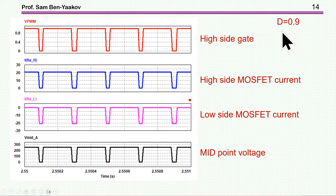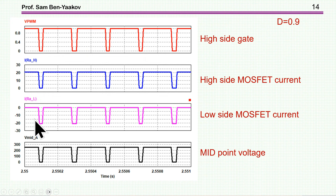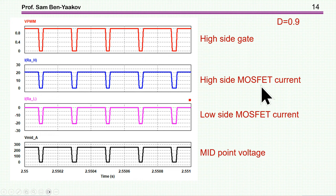Here is the example with a duty cycle of 0.9. We see the drive of the high-side switch, the current of the high-side MOSFET, and the short-duration current of the low side. The midpoint generates this particular voltage. The picture is reversed for a very low duty cycle, where the high side is short and the low side is long.